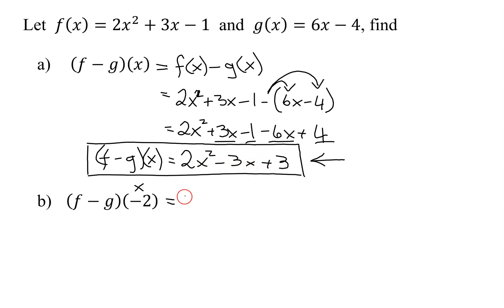So I'm going to get 2 times, remember x is -2, (-2)² - 3 times x, which is going to be -2, + 3. So now it's just arithmetic. Remember you square first.